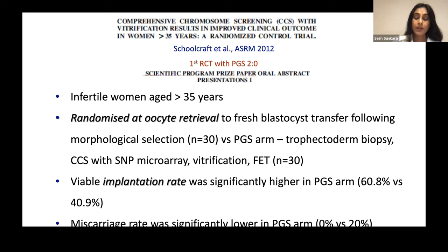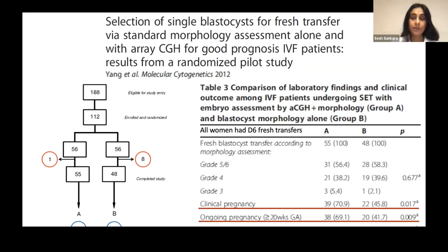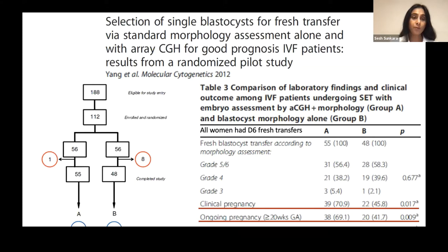This first study showed that in infertile women more than 35 years of age, there was an increase in the implantation rate with PGS. Another study, from a joint China and United States group, looked at selection of a single blastocyst for fresh transfer via standard morphology assessment alone versus with second generation PGS, for good prognosis patients. This was a pilot study with small numbers — 55 versus 48. Looking at clinical pregnancy and ongoing pregnancy at 20 weeks or more, the PGS arm showed significantly improved outcomes compared to the routine morphological selection arm — though again with small numbers and insufficient power.